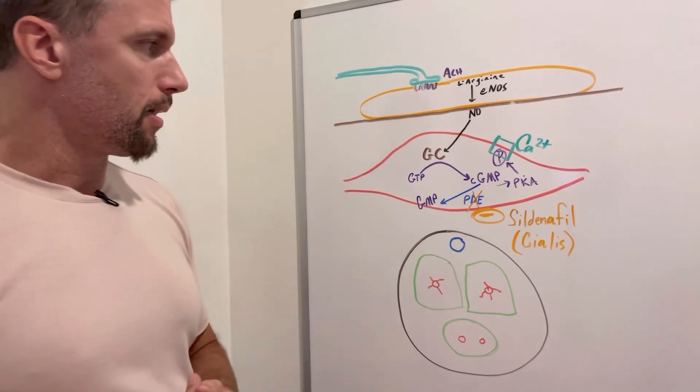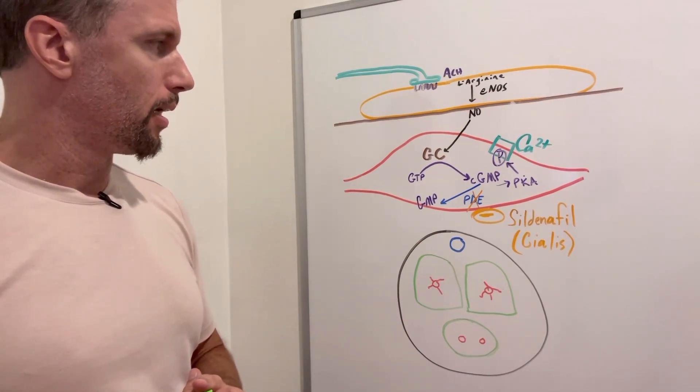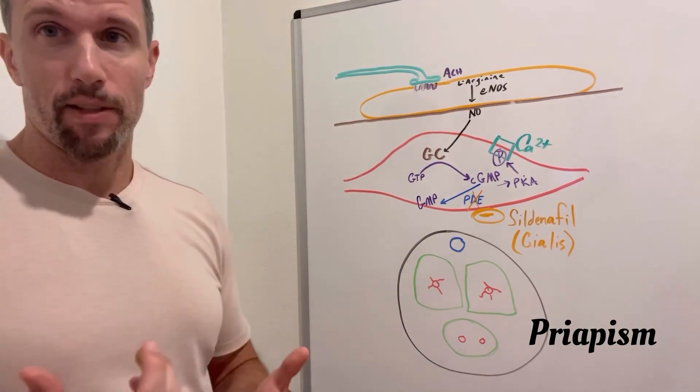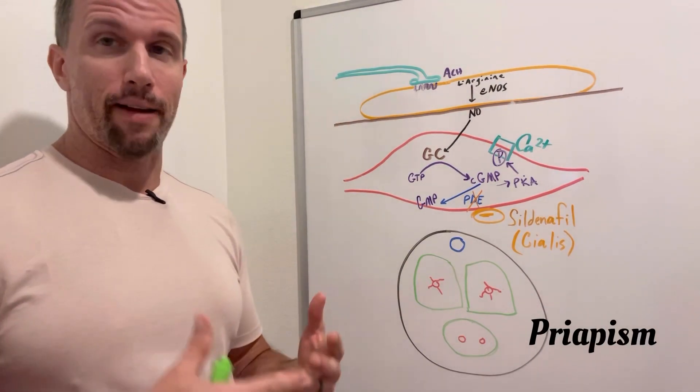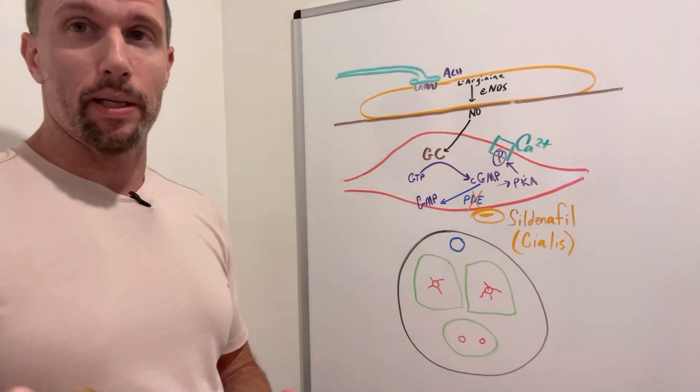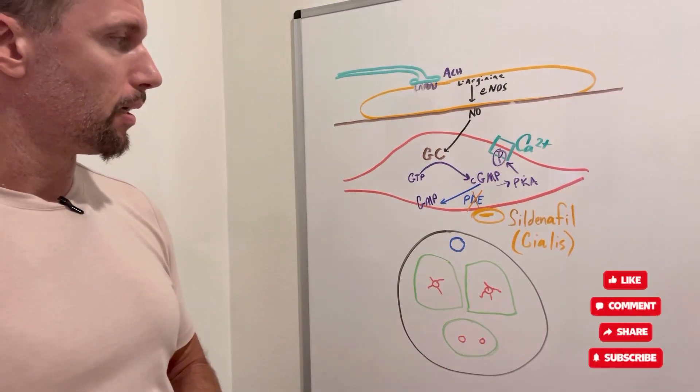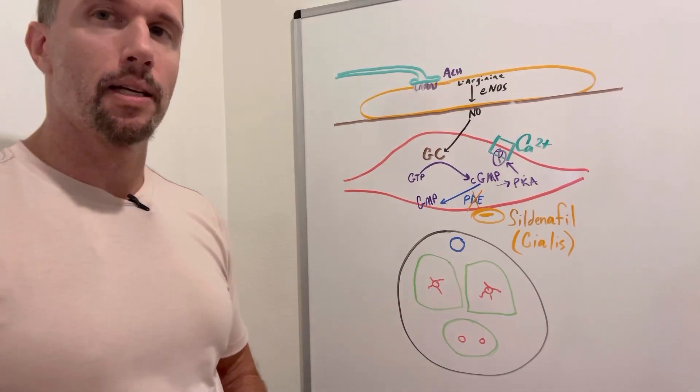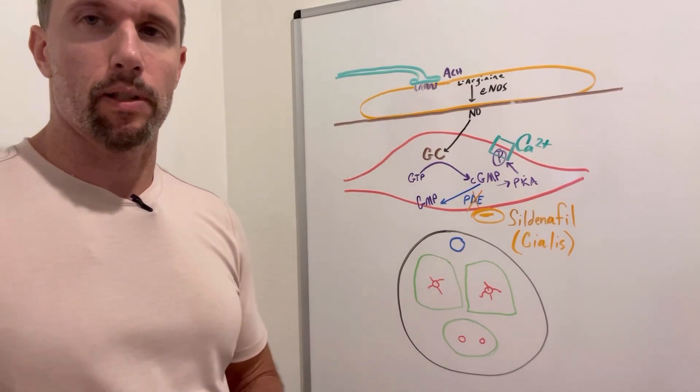And that's how this drug works. And priapism is a side effect of these drugs where you can have erection lasting more than four hours, and it's actually a medical emergency. It can do permanent damage. But that's the mechanical action of how phosphodiesterase inhibitors help with erectile dysfunction.